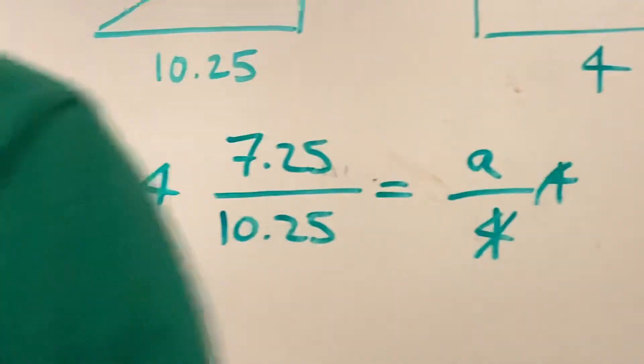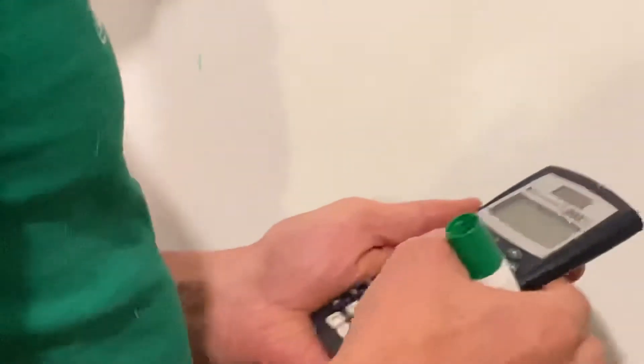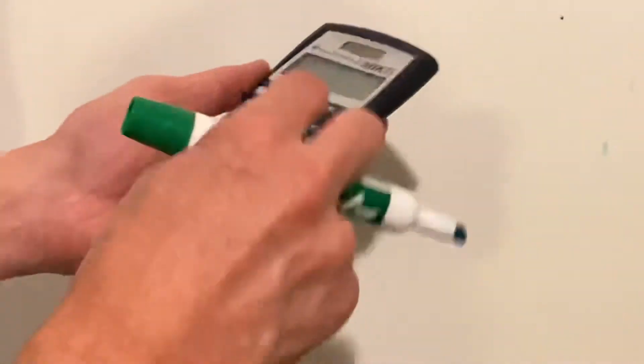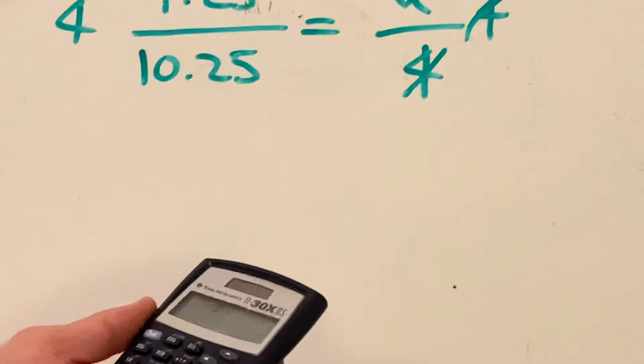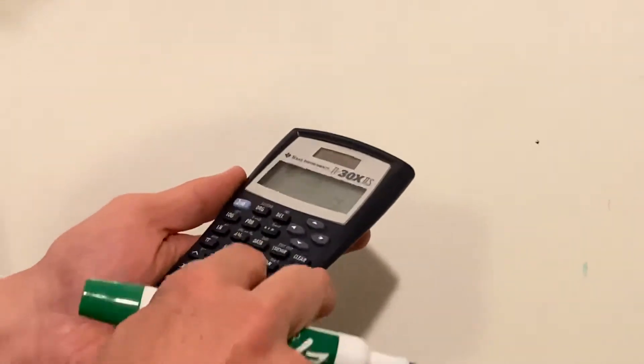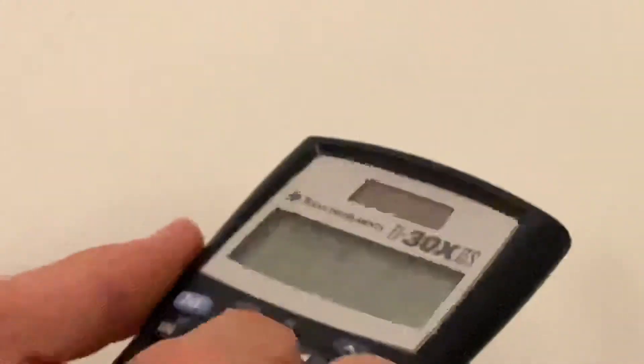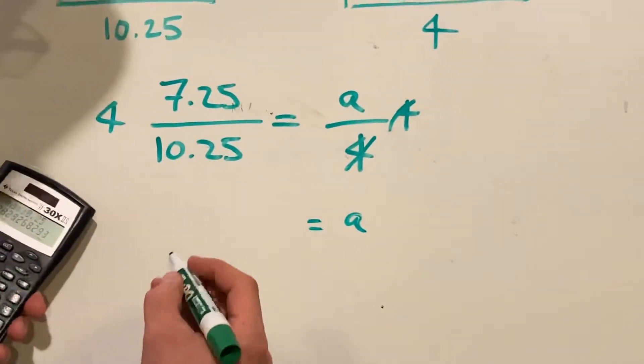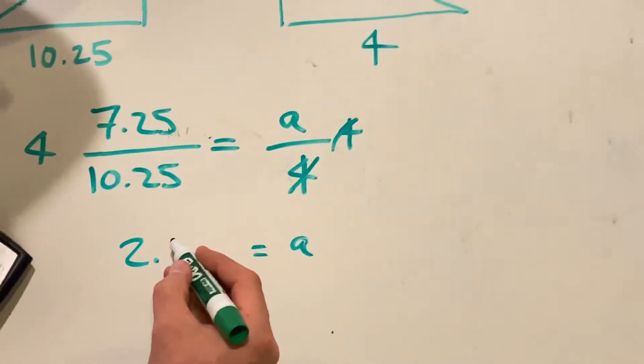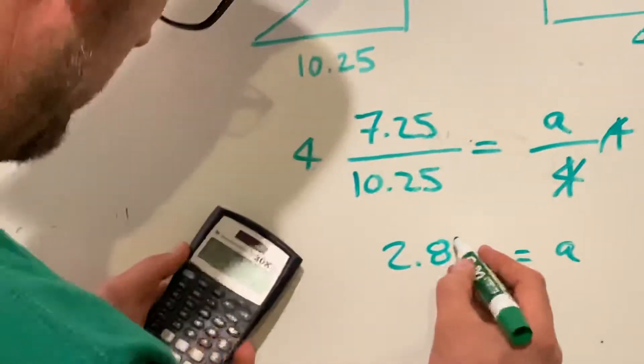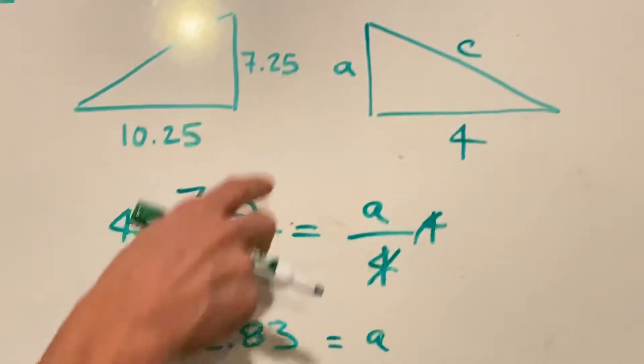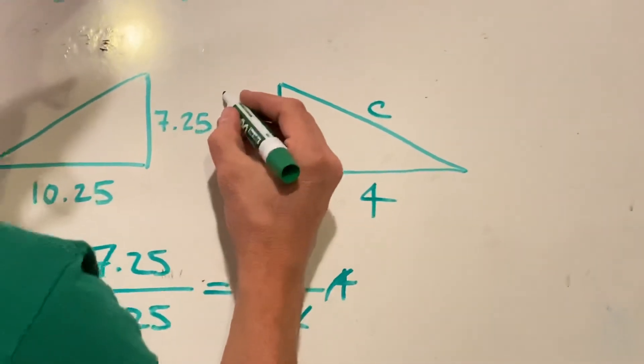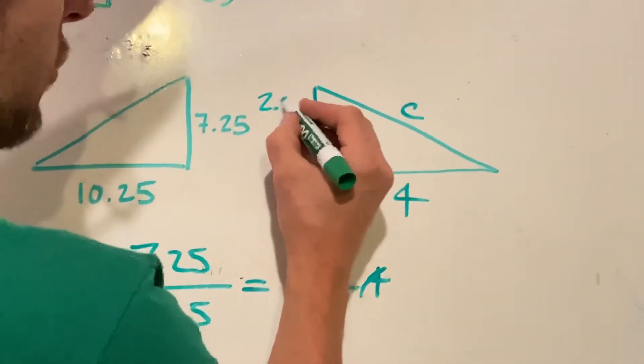When we do that, I've got my little scientific calculator. You don't need to see the math, but I'll do the math here so that I can tell you what the answer is. Four times 7.25 and then divided by 10.25. And our answer is a equals two point about eight three.